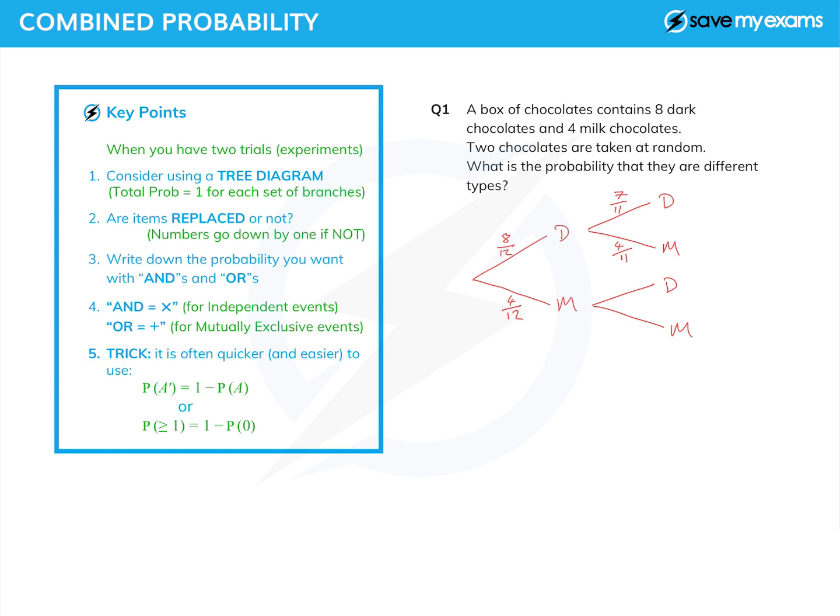For the second set of branches, well, there are eight dark chocolates left, but only 11 chocolates in total. And now there are only three milk chocolates left, if I've taken one out, and 11 in total. And again, the numbers are going down by one.